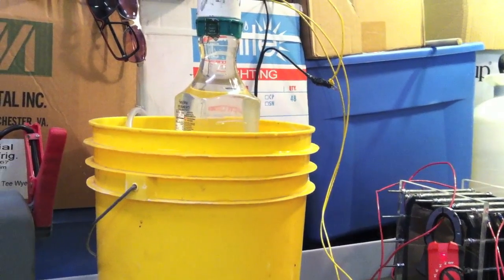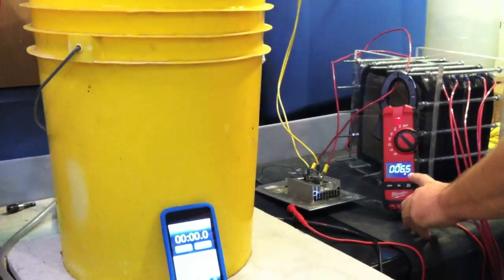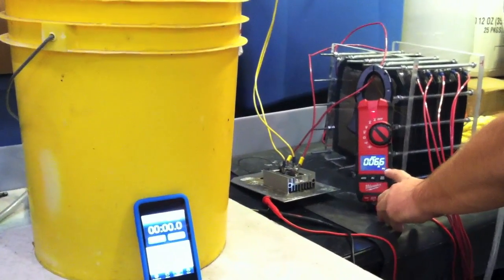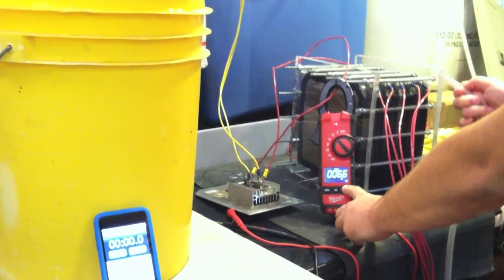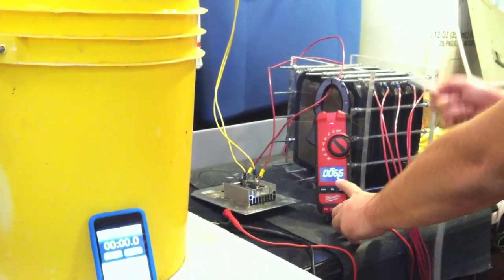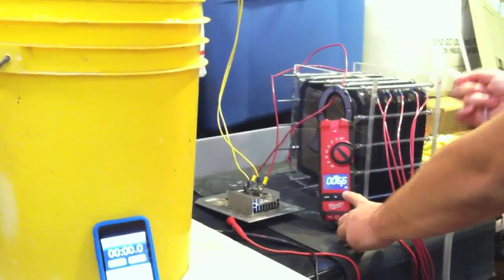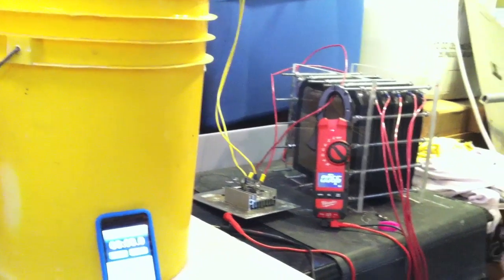So we are already at 6.5 amps because as the water warms as the cell runs the water gets slightly warmer. And while it is warming for reasons I haven't figured out yet it draws more current. And if it draws more current it produces more hydrogen.